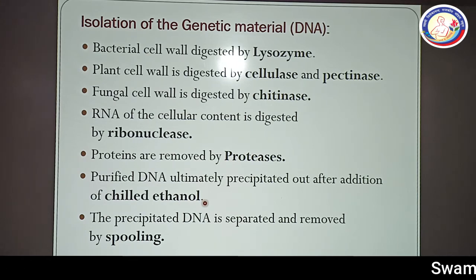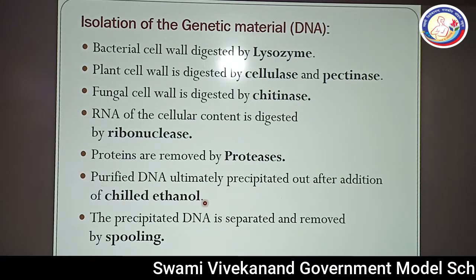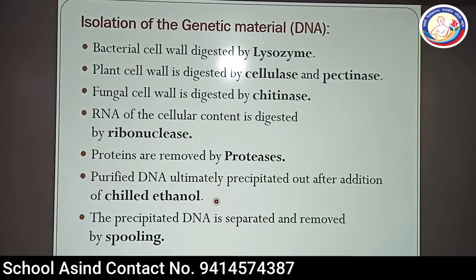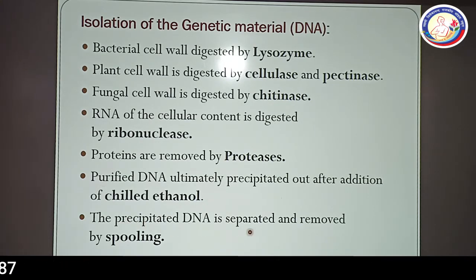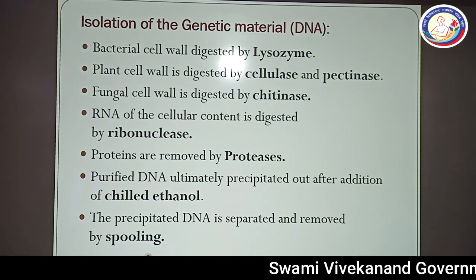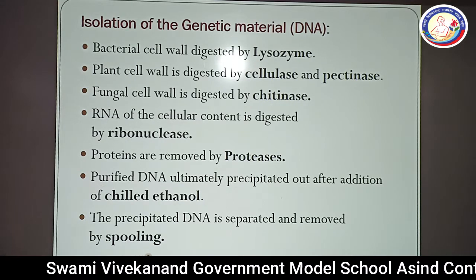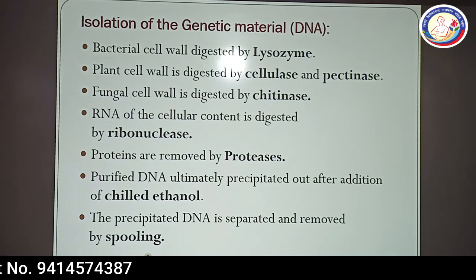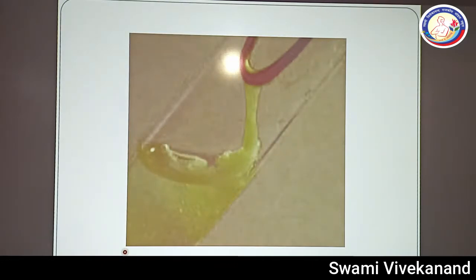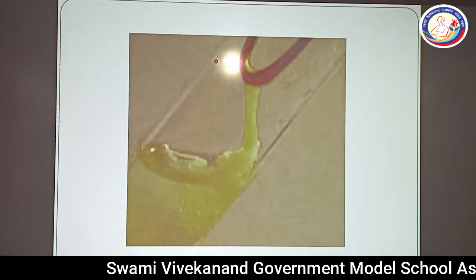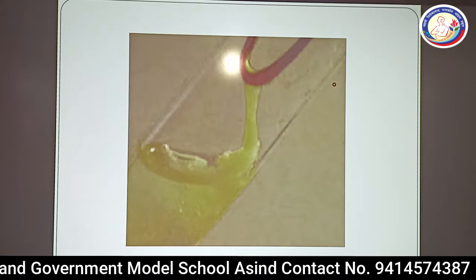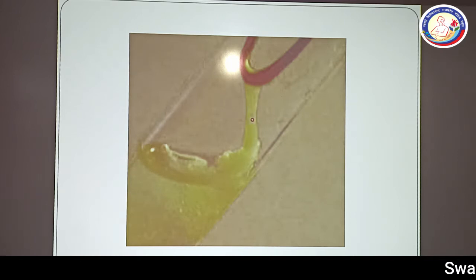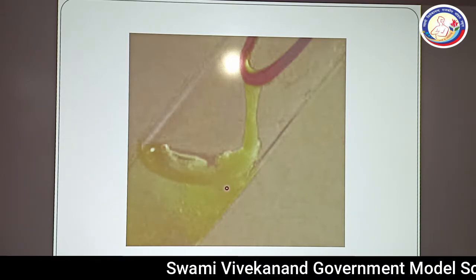We will perform this activity in our biology lab using papaya. It has a standard protocol and is also part of the major practical — you need to write it into the practical record. The precipitated DNA is separated and removed by the spooling method. You can compare spooling with Maggie noodles: just as you coil Maggie using a spike, similarly the spooling process is used. You can see the picture — precipitated thread-like DNA is present in the test tube and a round-shaped structure is used to remove it.